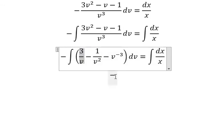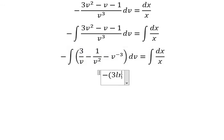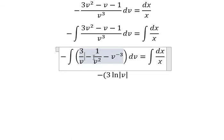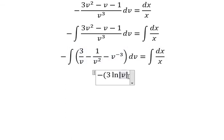This one, we have 3 ln of the absolute value of v. This one, we have positive 1 over v.